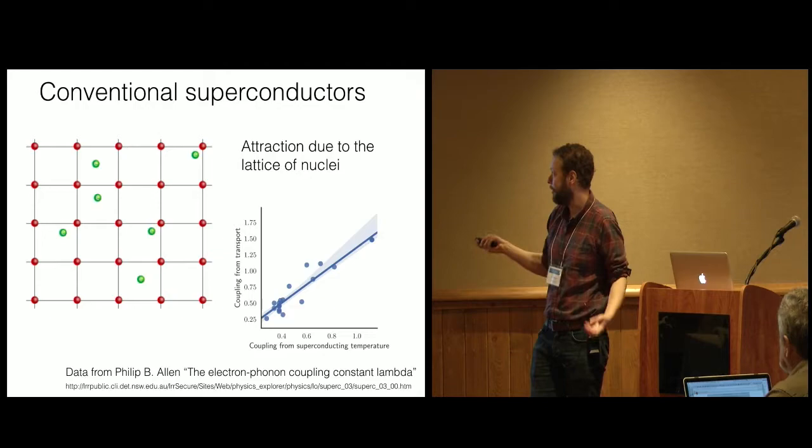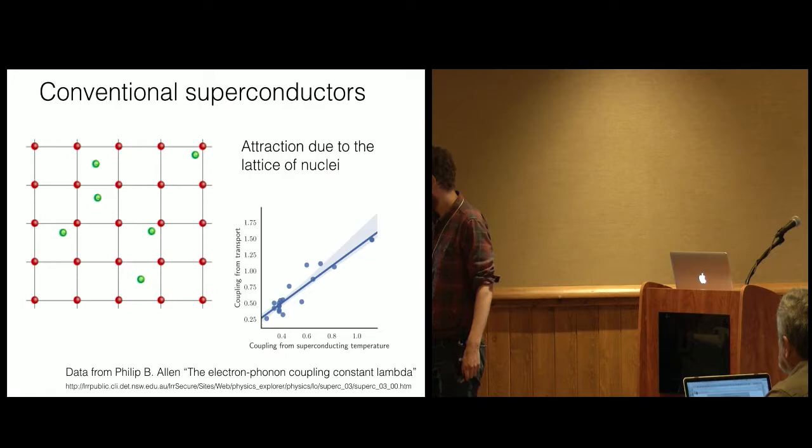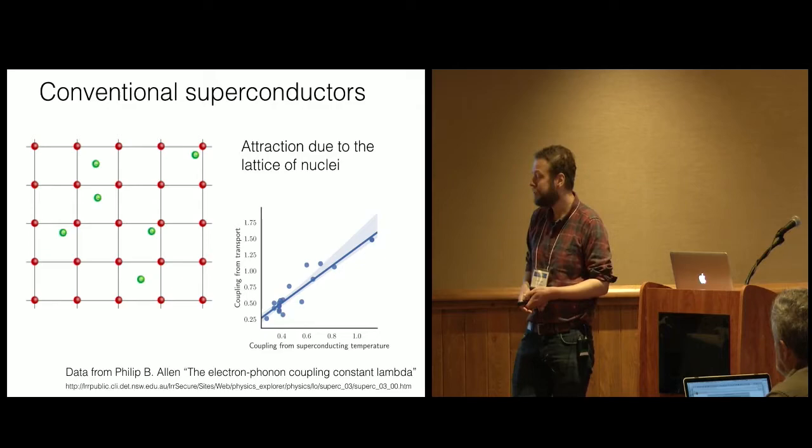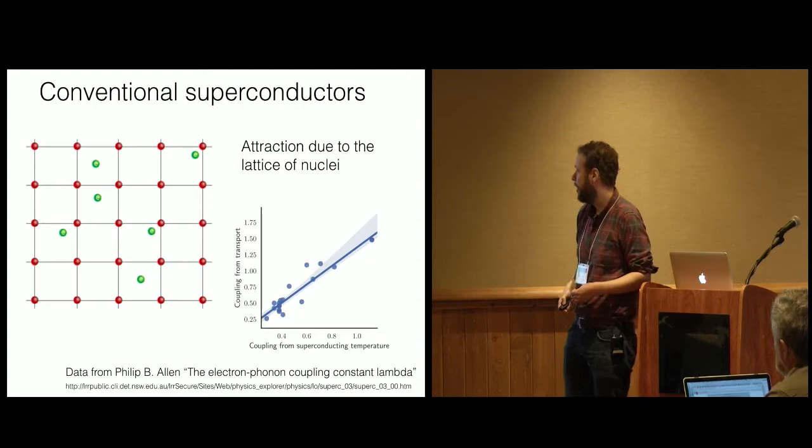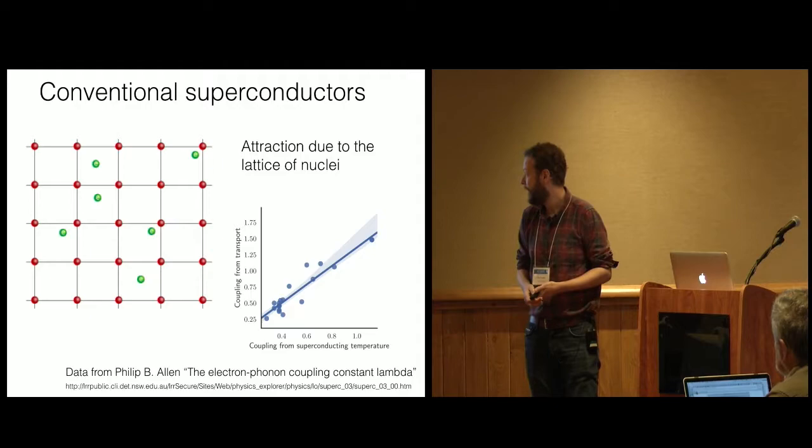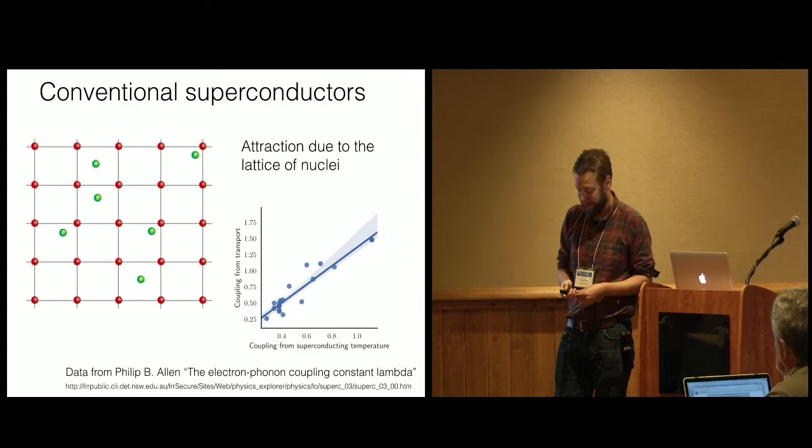So just to kind of convince you that we kind of do know how conventional superconductors work, and I'm going to motivate somewhat how we think unconventional ones might work. Let's talk about how they work. So we have electrons, and they kind of float around in a lattice of nuclei. So the red things are nuclei, and the green things are electrons. And when the electrons move around, they kind of make a wake in the nuclear lattice. The nuclear motion kind of moves around, and electrons compare due to that motion. So it's similar to that wake that I was talking about before. And what you can do is you can actually measure the coupling between the electrons and the lattice, right? You can either measure that using transport measurements. I'm not going to get into how you do that. And you can also measure it using the superconducting temperature. And you can plot them against each other, and they line up pretty well. And most of the difference here we understand is basically measurement error and other things like that. So we kind of understand how this works.